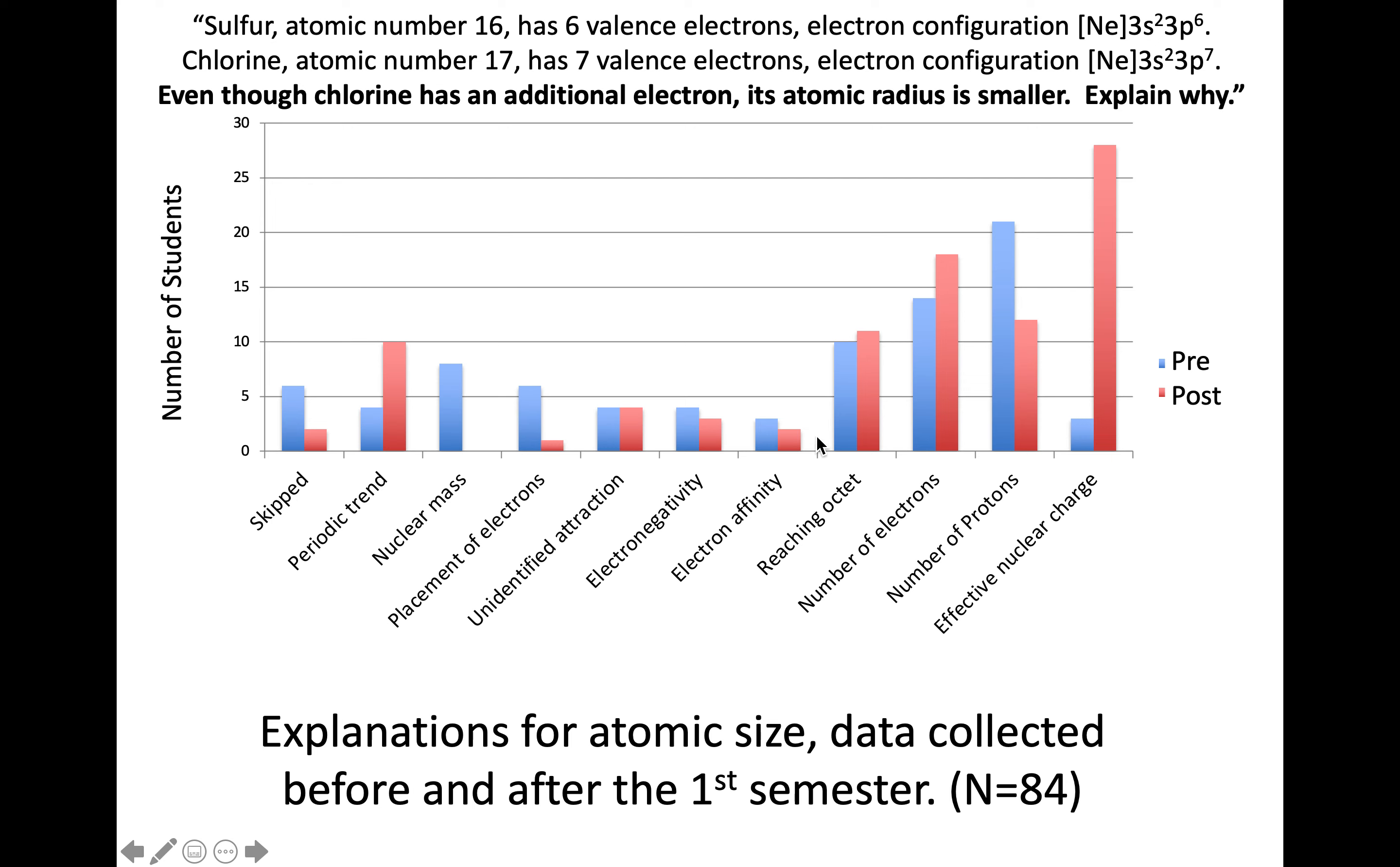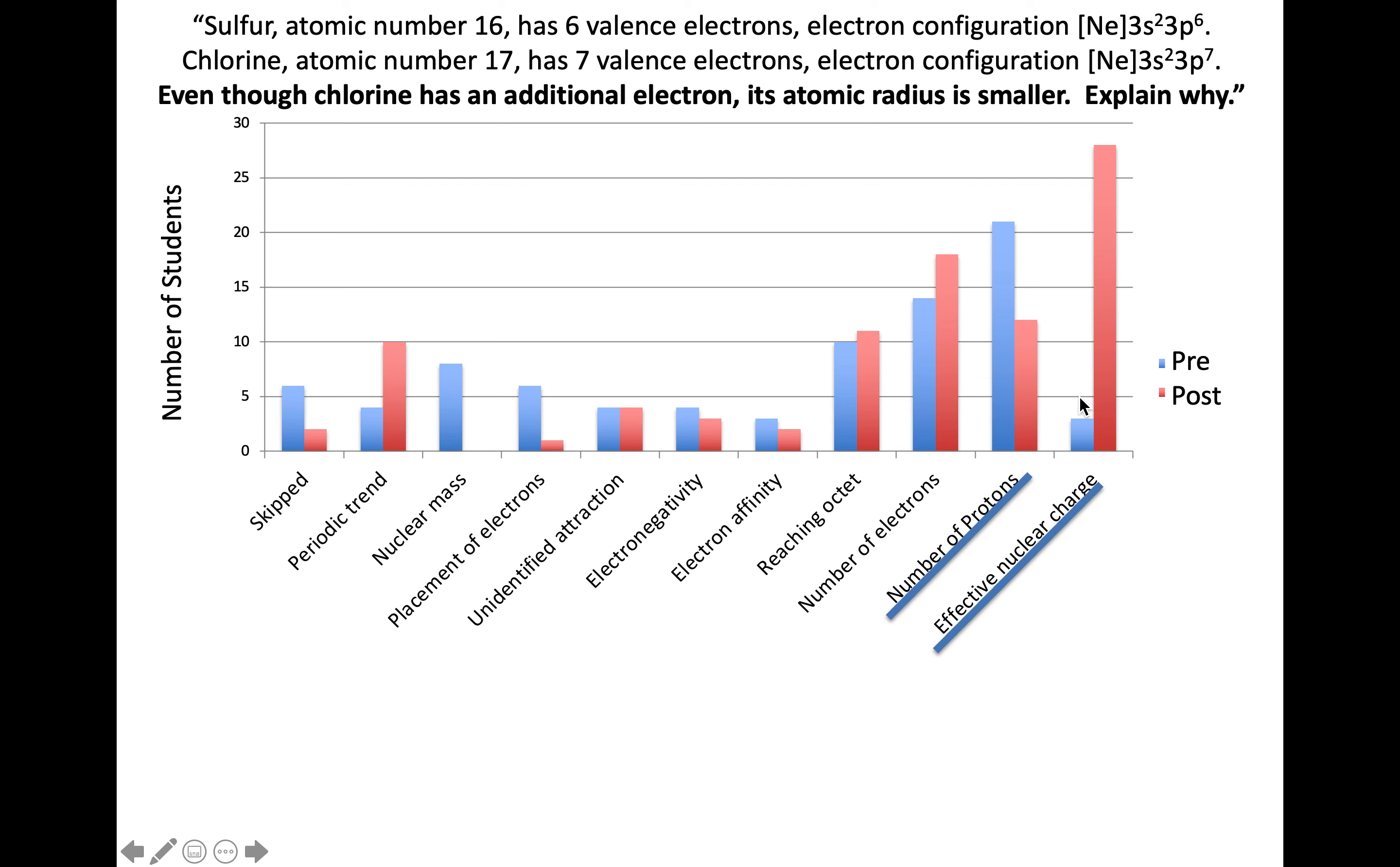The blue columns are the classification before instruction and red columns afterward. Quite a few different categories emerged. I've set this up where the ones on the right are the more advanced, complete explanations, with consideration of protons and effective nuclear charge. I don't view this as a simple progression left to right, but the best explanations include those features shown on the right.